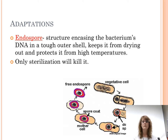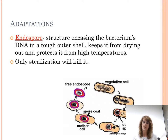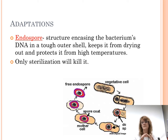The endospore is a structure encasing the bacteria — it helps keep it from drying out and protects it from temperatures. Only sterilization will kill it. You might rinse your dishes in the sink, but all you're doing is washing the food off — the bacteria is still on the plate. That's why we have a dishwasher. We need really hot water because that heat breaks down the chemicals in the cell wall, water rushes in, and the bacteria explodes and dies.